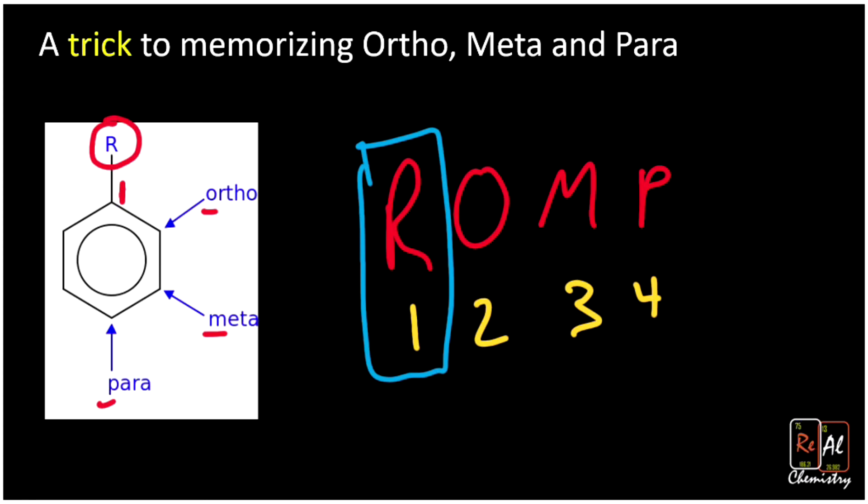If we have an ortho compound, our second substituent is going to be at the second position. If we have a meta compound, the next substituent is at the third position. And if we have a para compound, it's going to fall at the fourth position. So ROMP—really easy way to remember that order of ortho, meta, and para.